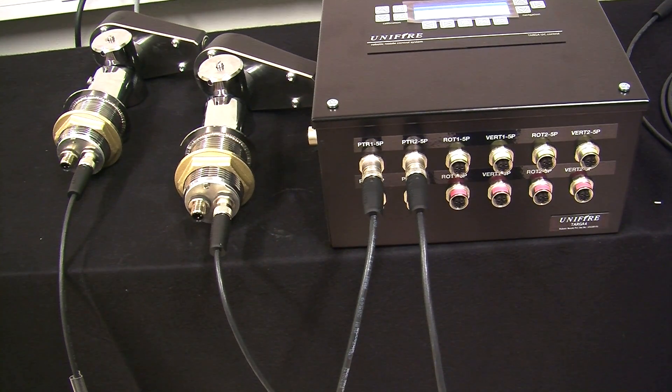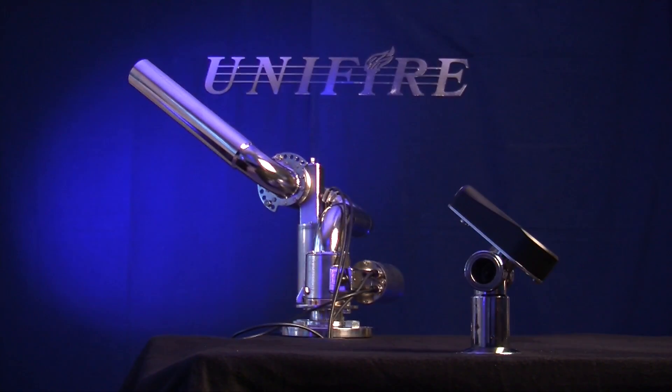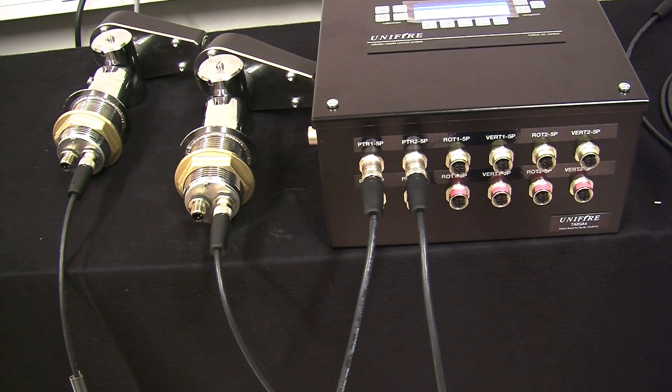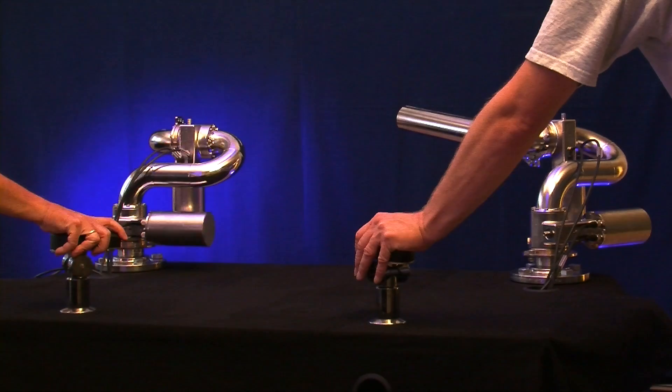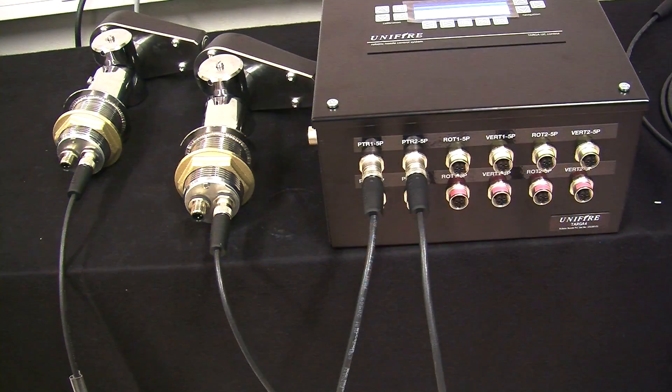Connecting the pointer to a Targa—in this case we have a system with two pointers and two robotic nozzles. Each pointer controls one robotic nozzle. As you will see, each pointer has two connectors: one five-pin connector and one three-pin connector.